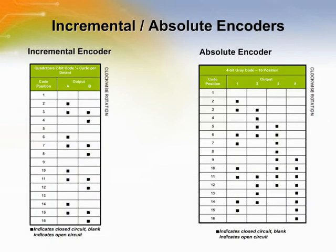An incremental encoder is called a quadrature because it repeats itself every four positions. The alternating on-off state produces the output signal. A microprocessor chip that reads a quadrature encoder can only determine the direction — clockwise or counterclockwise — and the number of increments or detent positions that the encoder shaft has been rotated.